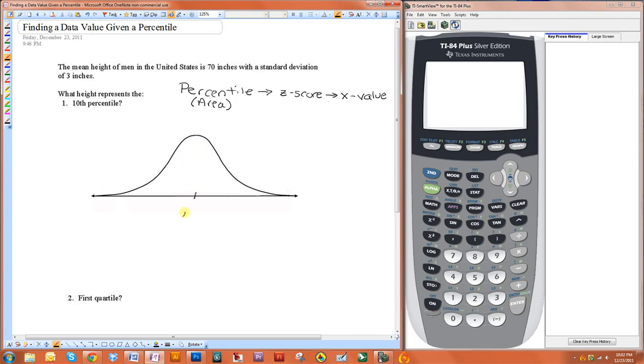So the mean is going to be 70, and the standard deviation is going to be 3. We're essentially looking for something that has 10% or 0.1. So what we're looking for is the z-score for that value right there. We want to know what z is here.